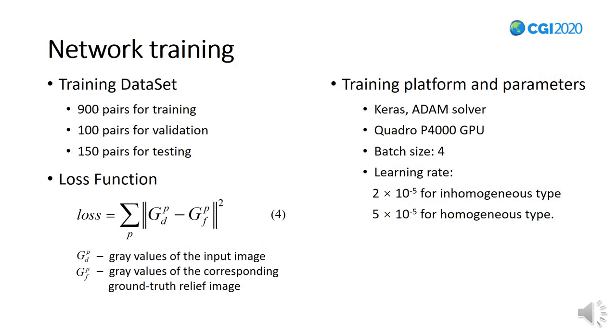We train our network for inhomogeneous and homogeneous predictions respectively. The network parameters are learned by minimizing the sum of pixel-wise loss function. We use Keras to implement our network. We train using the Adam solver. It takes about three hours to train the networks with batch size 4.